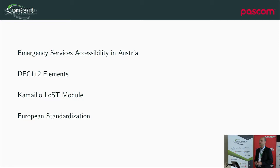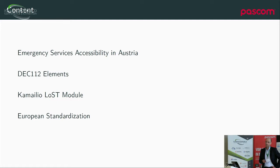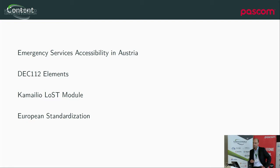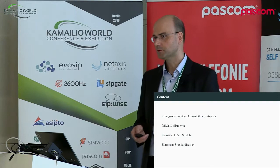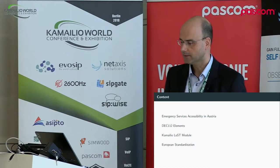So that's the content of my presentation. As I mentioned, this trial in Austria — this pilot in Austria — it's a funded project. I will introduce how emergency services work in Austria, especially the accessibility services. I'll talk about the elements we are providing as open source in that project. One important piece is the LOST module we've implemented for Kamailio, which enables Kamailio to access GIS databases for location-based emergency call routing. That's not just something you can use for emergency calling — whenever you have a purpose for location-based call routing, this would be the standardized way to do it. I'm also involved in European standardization, which I'll touch on at the end.